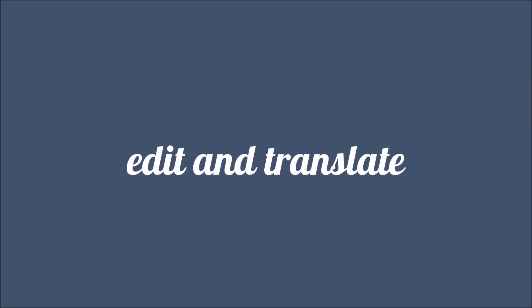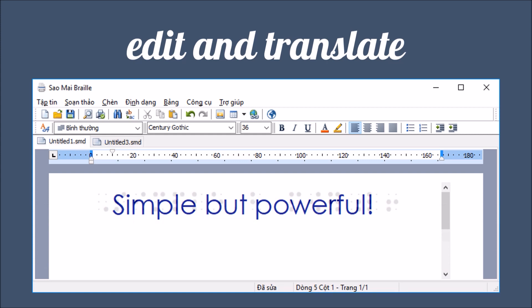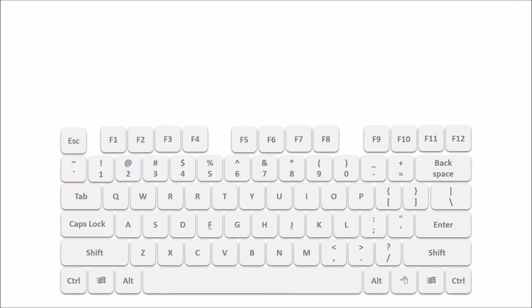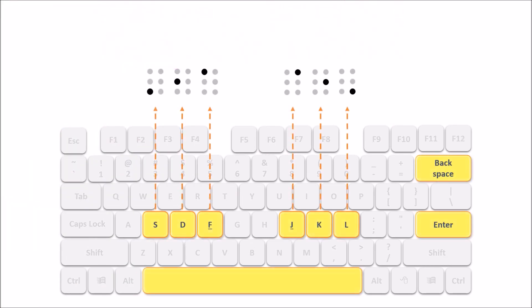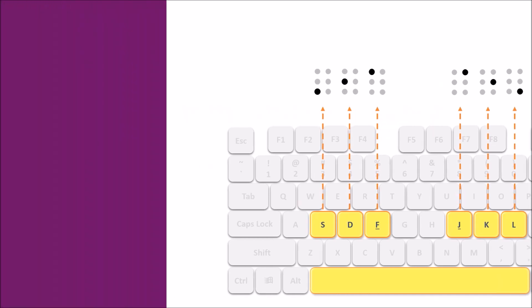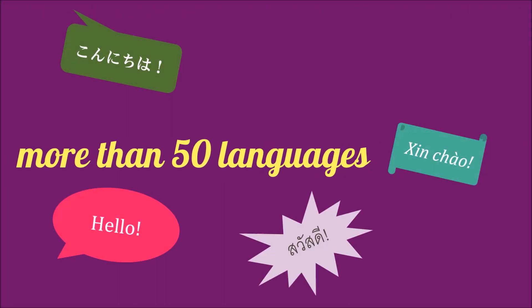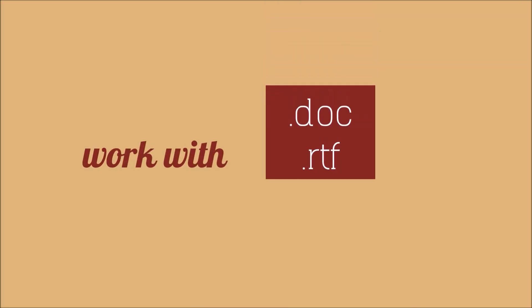Main Features: Edit and translate rich text into braille in both uncontracted and contracted forms. Support 6-key input method. Translate for more than 50 languages with the LibLouis library. Work and translate correctly from popular document formats.